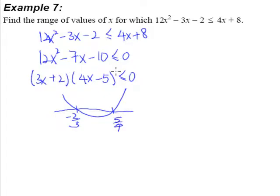So what we're interested in, we're interested in the negative part of the curve. And therefore, the negative part of the curve will be the part that is underneath the x-axis. So the values, the range of values of x, x must be in between -2/3 and 5/4. So this will be our answer for this example.